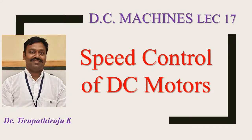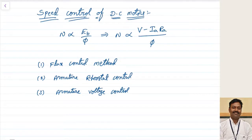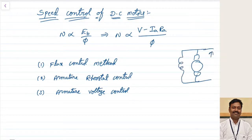Good morning. Today we are going to discuss the speed control of DC motors. We have seen that speed is proportional to Eb divided by phi. For a shunt machine, there is a field winding, supply voltage, armature current, and shunt field current Ish, which equals V divided by Rsh. The back EMF Eb equals V minus Ia×Ra, divided by flux phi.